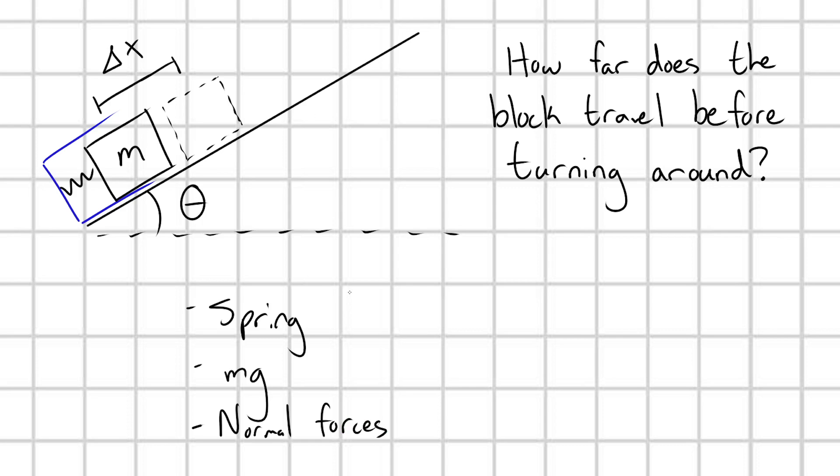Now, Hooke's Law spring forces and gravitational forces, these are conservative. We know that these are conservative forces, and our normal forces, which are always perpendicular to the block's motion, they're perpendicular to the block's motion direction, and therefore they do no work.